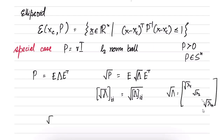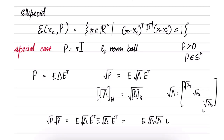We can verify that √P times √P equals E√Λ · E^T E · √Λ E^T, which simplifies to E · √Λ · √Λ · E^T, since E^T E is the identity. Multiplying two diagonal matrices simply multiplies corresponding entries, so √Λ · √Λ equals Λ, giving back P. This is called the square root decomposition.